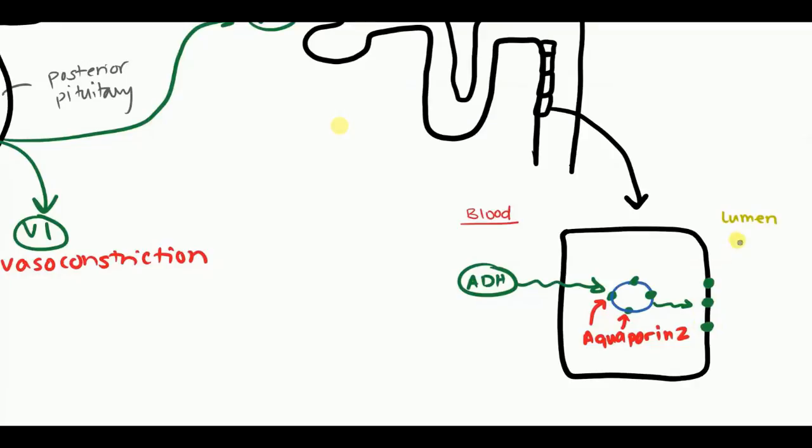Once it fuses with the membrane, those aquaporin channels line against the lumen of the tubules. As water is passing through, they're going to go through the aquaporin channels out into the other side, into the interstitium, and finally the blood. Here on the nephron you can see water becomes reabsorbed and therefore doesn't get excreted in the urine. If you have too much of this, you can't excrete any water, you're just retaining all the water that you ever drank.